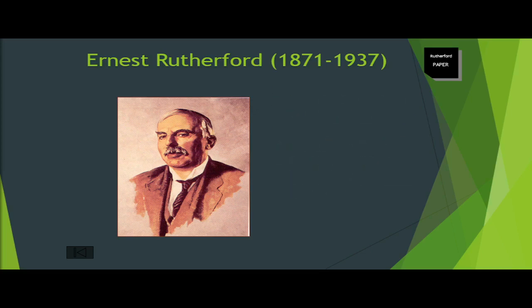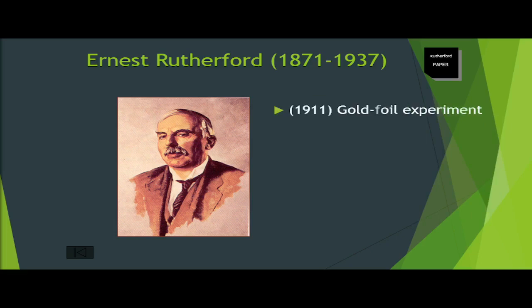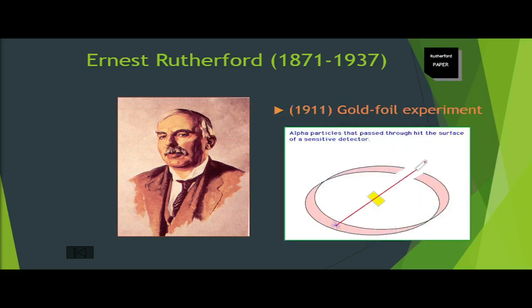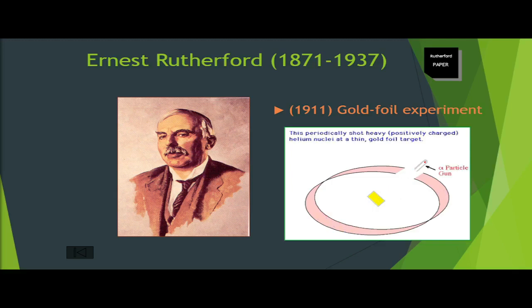Rutherford was born in New Zealand, awarded the Nobel Prize for Chemistry in 1908, and his portrait appears on the New Zealand hundred-dollar bill. In 1911, Rutherford and his co-workers devised the gold foil experiment to test the plum pudding model. They used alpha particles — helium atoms that have lost their two electrons, giving them a double positive charge. A narrow beam of alpha particles was directed at a very thin sheet of gold.